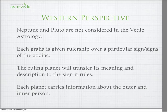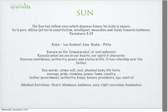Parashara said the sun has yellow eyes which dispense honey, his body is square, he is pure, bilious — pitta in constitution — intelligent, masculine, and tends toward baldness. The sun is the life-giving source of the planet — it's energy. If the sun is in Leo in the first house, that person at some point may possibly suffer baldness depending on where other planets are located. These are just tiny bits of information that we're going to build on.